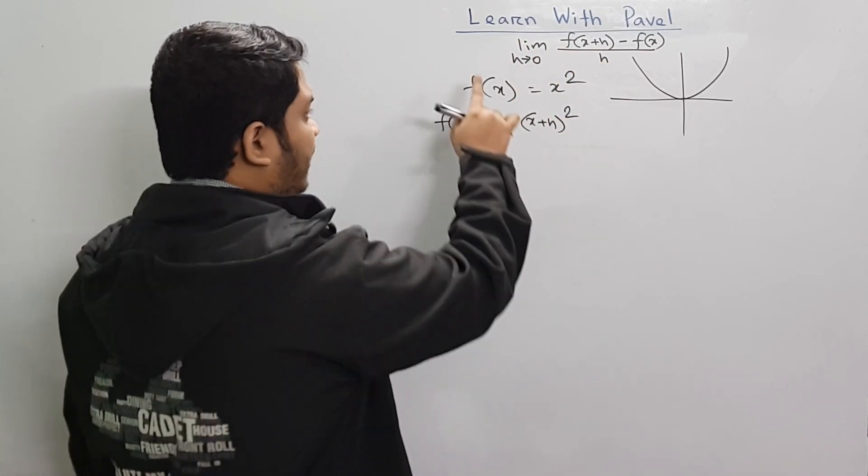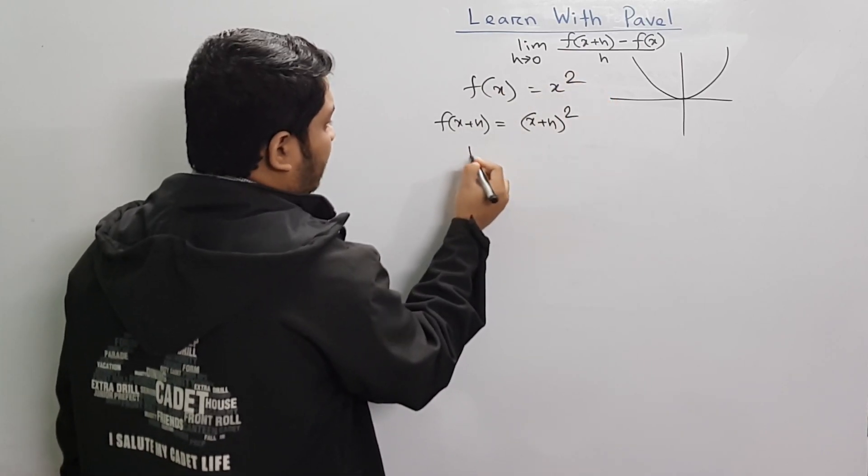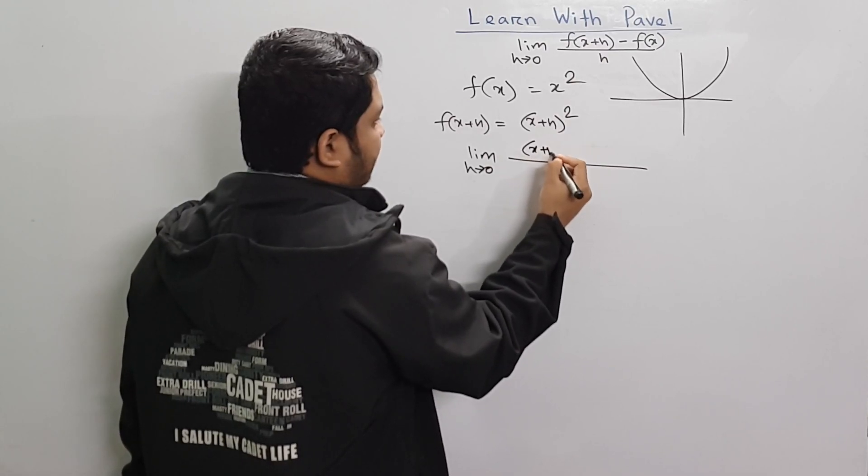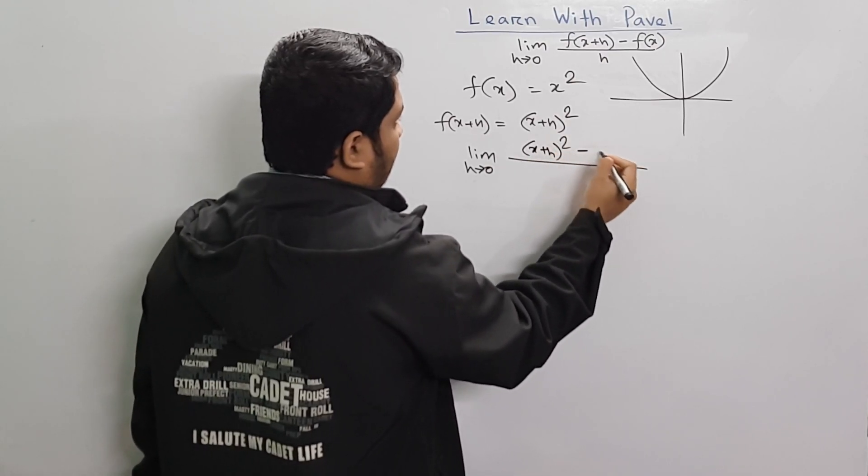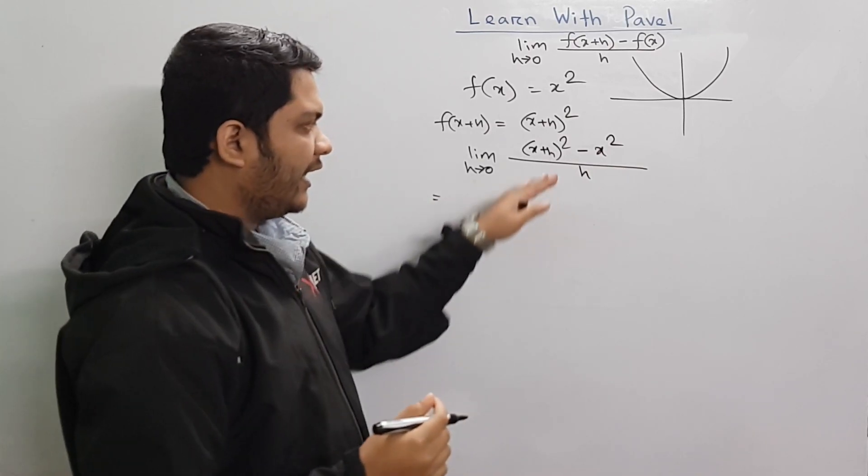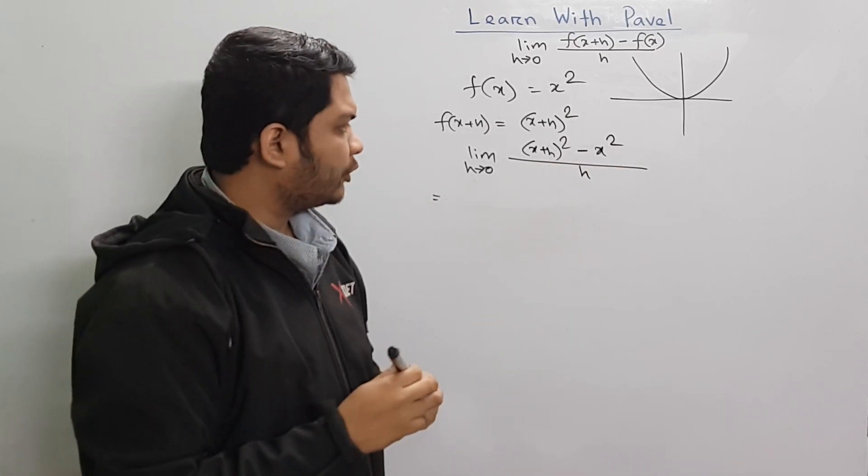If you want to replace the formula, limit h approaches 0, f of x plus h - that's x plus h - minus x square, divided by h. This is the process.